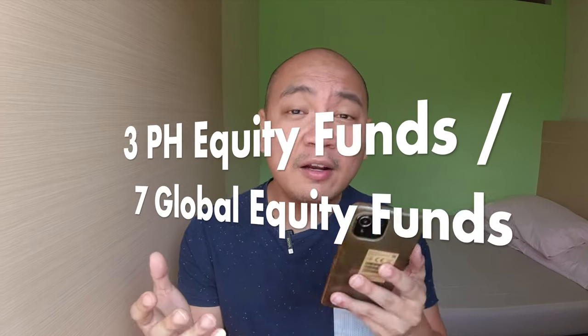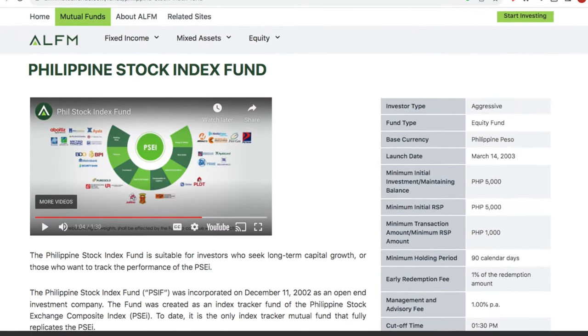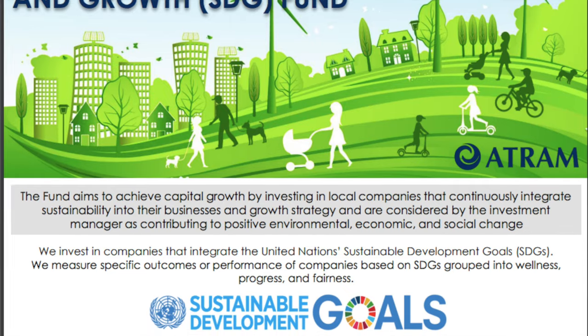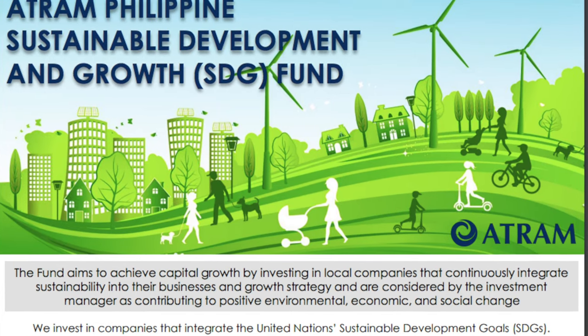For the higher risk funds, we can separate them between Philippine funds and global equity funds. For the Philippine funds, there is the ALFM Philippine Stock Index Fund, the Atram Philippine Equity Smart Index Fund, and the Atram Philippine SDG Fund — the Philippine Sustainability and Development Fund that we've also discussed in previous videos. So far, everything that Maya is making available has also been available via GCash G-Invest, but we are getting there.